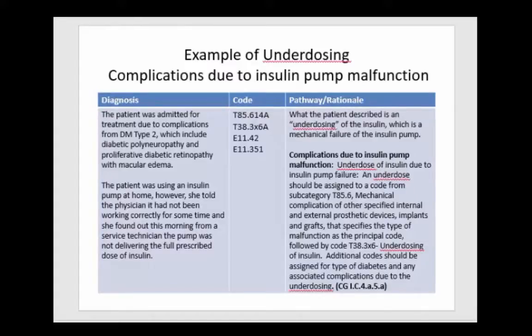Here's an example: a patient was admitted for treatment due to complications from type 2 diabetes, which include polyneuropathy and proliferative retinopathy with macular edema. The patient was using an insulin pump at home; however, she told the physician it had not been working correctly and a service technician confirmed the pump was not delivering the full prescribed dose of insulin. This is an underdosing due to pump malfunction. Per the Chapter 4 guidelines, the underdose of insulin due to insulin pump failure is assigned a code from subcategory T85.6 — mechanical complication of a device — then you add the T38 code for underdosing of insulin, and then your diabetes codes.